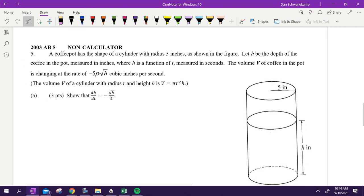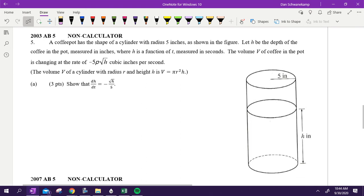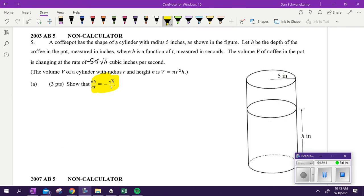Number five. It says a coffee pot has the shape of a cylinder with a radius of five inches as shown in the figure. Let H be the depth of the coffee pot. Let H be the height. The volume of the coffee in the pot is changing at negative 5 pi radical H. Mine just printed wrong. Negative 5 pi radical H cubic inches per second. Show that DHDT equals negative radical H over 5. So they're not even, they tell you what the answer is. That is the answer. You are trying to figure out what DHDT is and showing that it's that. All you got to do is show your work. Take a second. Label stuff. Go. See what you can do. If you can do the whole thing without me, great. But at least label stuff for a few minutes.